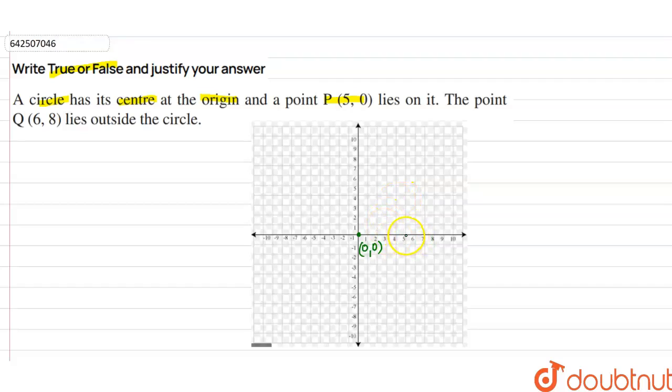(5,0) means x-coordinate 5 and y-coordinate 0. So this is the point that lies on the circumference of the circle. We know that from the origin, the distance between the point on the circle is called the radius of the circle. So as this is the radius of the circle.